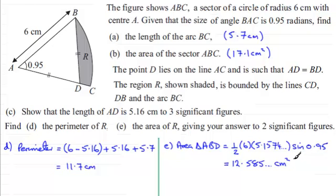So that means that we're in a good position now to get the area of R. So the area of R is going to be equal to the area of the sector ABC which was 17.1 centimetres squared and we subtract the area that we've just found, 12.585 and so on. And if you do that you'll find that you get 4.514 and so on.